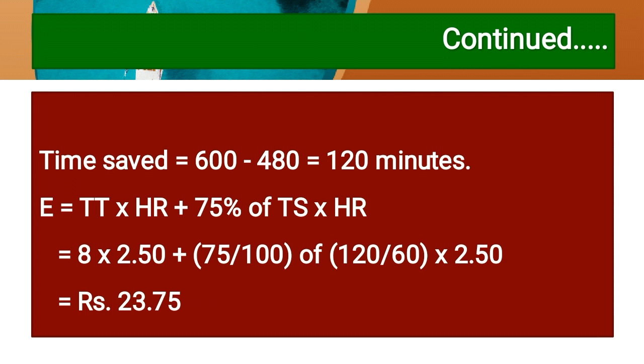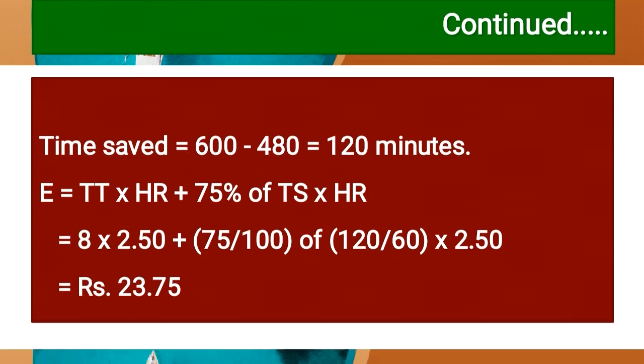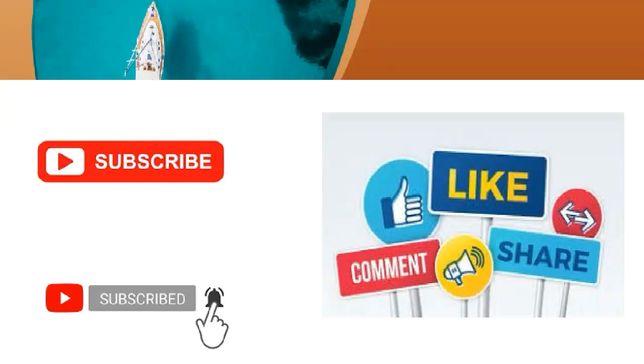These are all the different methods of incentive scheme. We covered: Halsey Premium Plan, Halsey Weir Plan, Rowan Scheme, Bath Scheme, Emerson Efficiency Plan, and Budox Premium Scheme. If you have any doubts, feel free to comment. Please share, give likes, and subscribe to my channel.